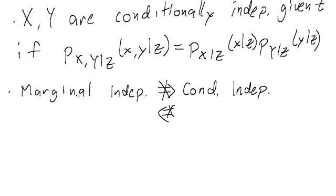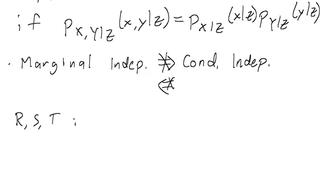So suppose we have three random variables R, S, and T. We'll have two different ways of writing the joint distribution and we'll look at whether they're independent. So we'll ask the two questions: is S independent of T, and is S independent of T conditioned on R?